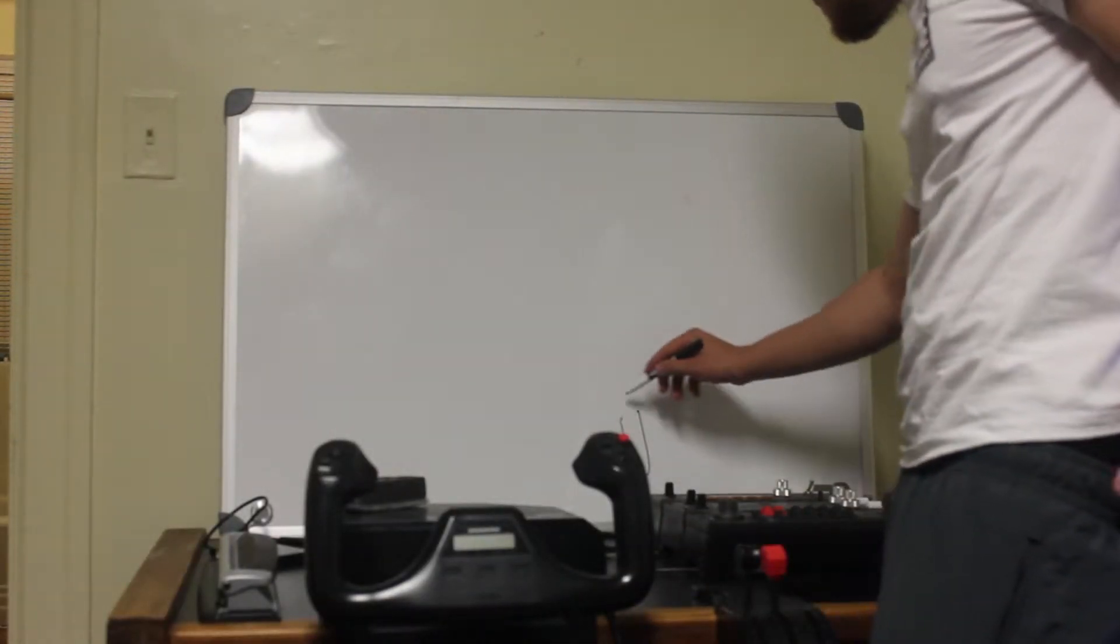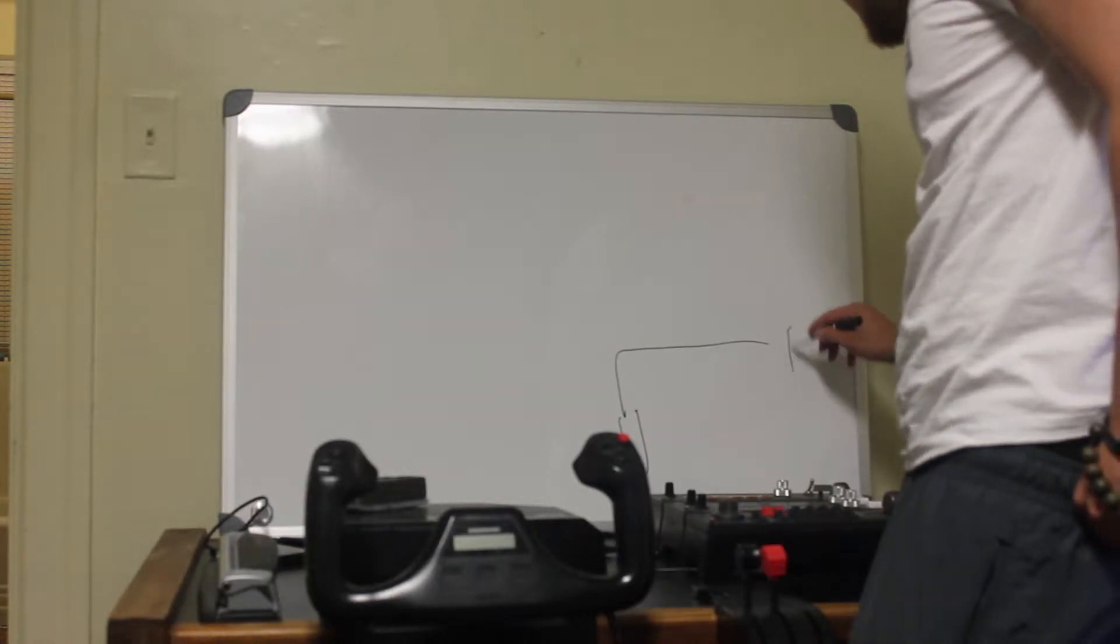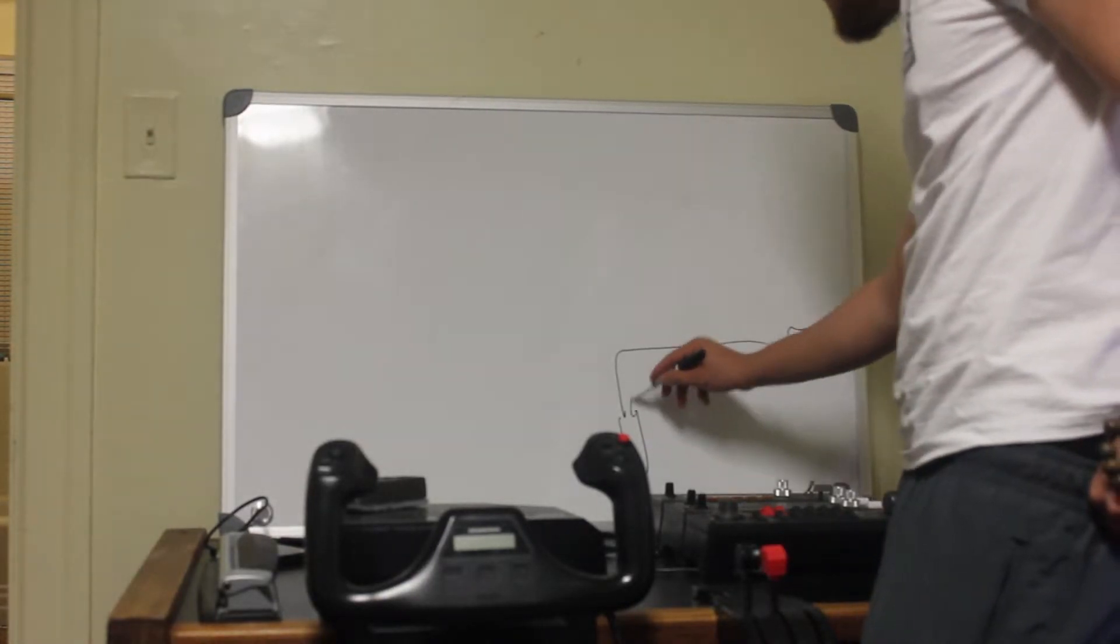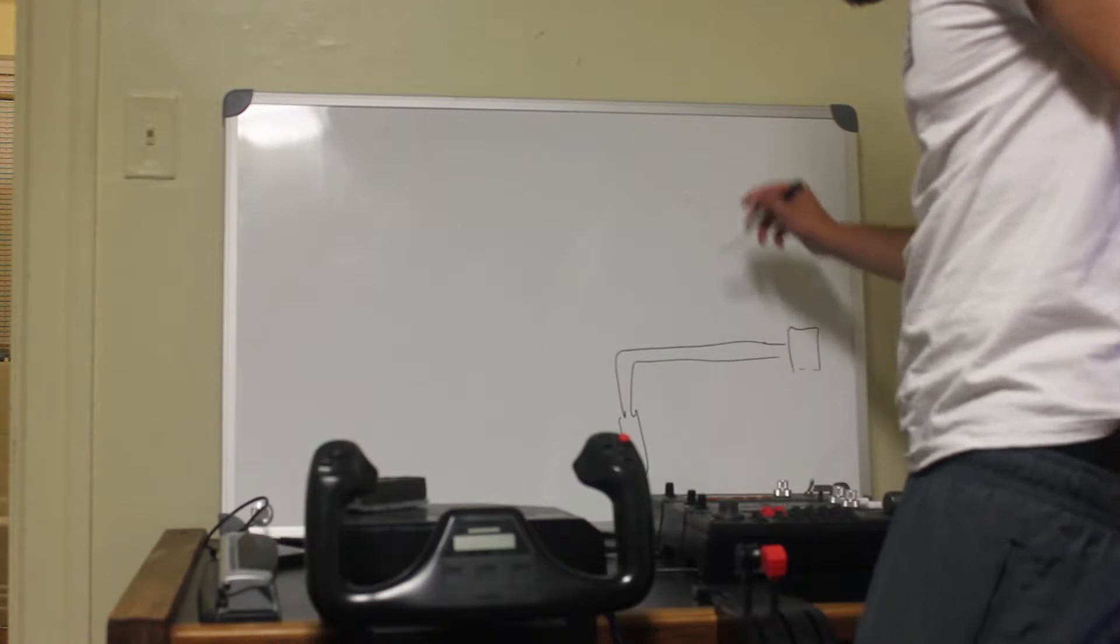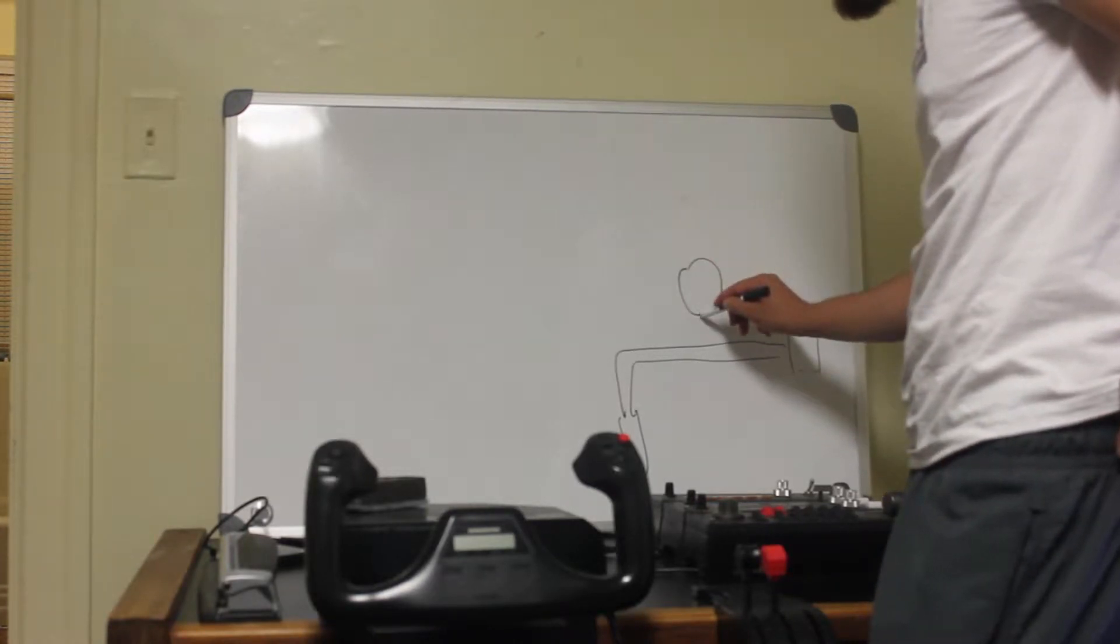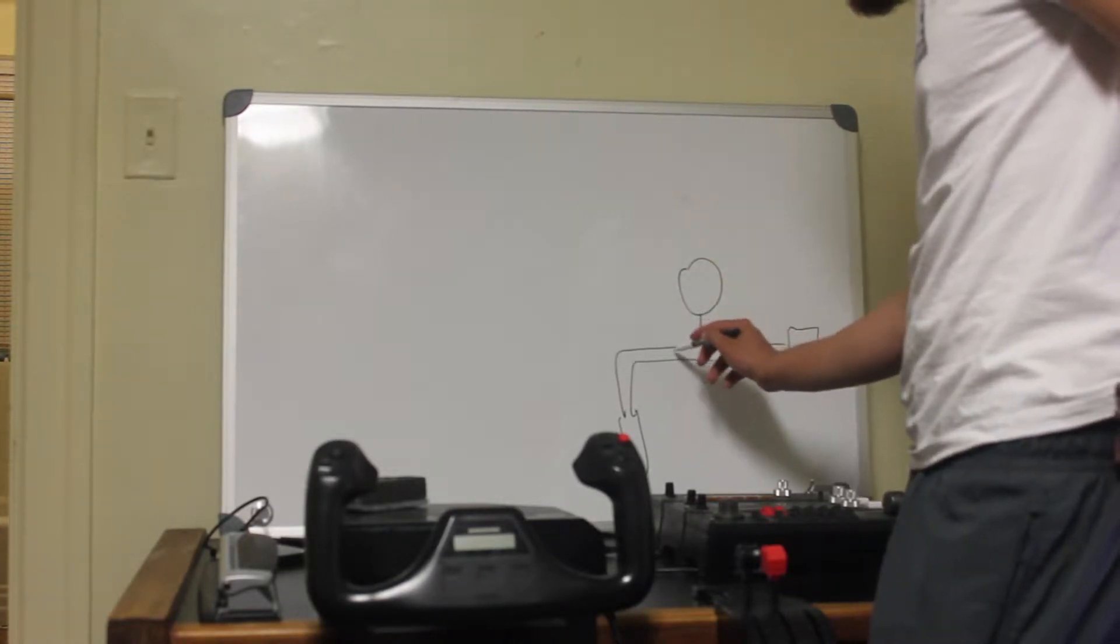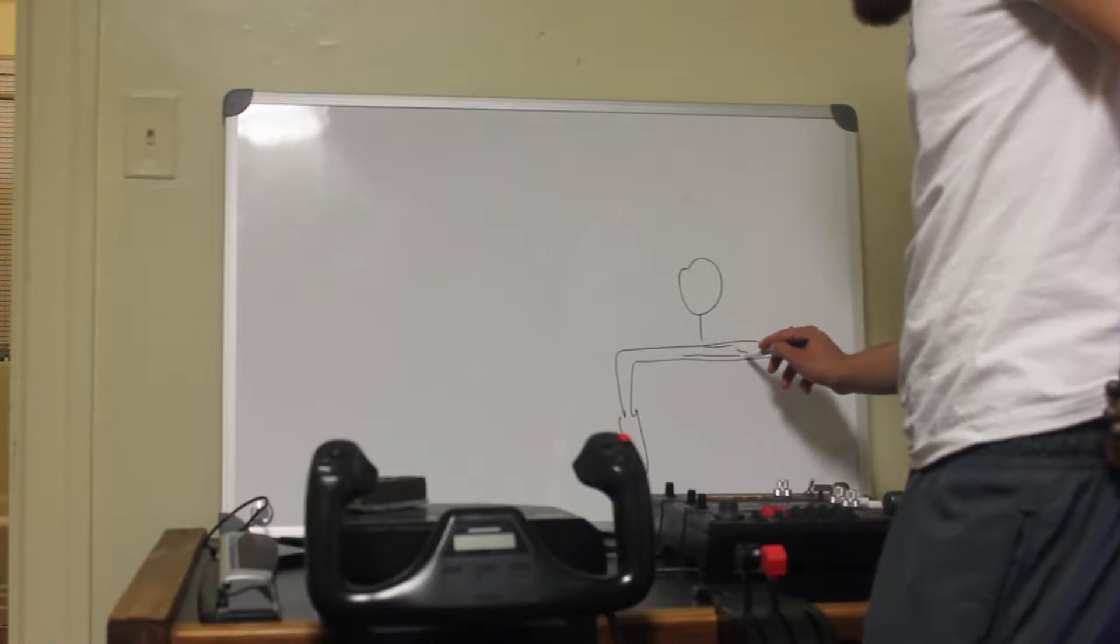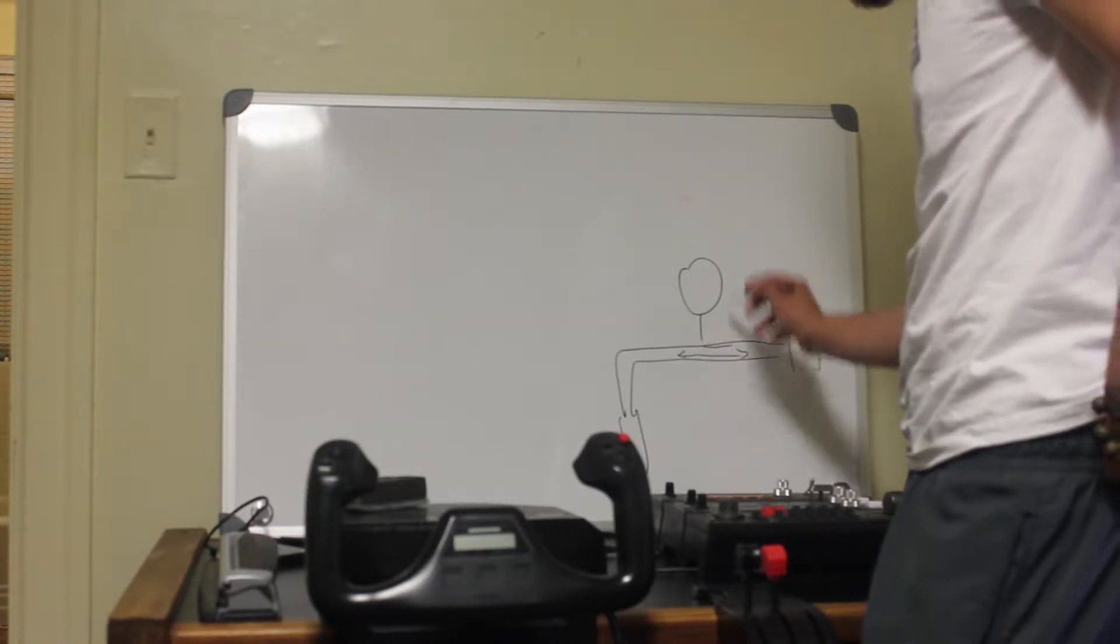So, for example, pitot tube and going to static system, the Vertical Speed Indicator, or VSI, is going to measure how much this ambient air pressure is decreasing or increasing.